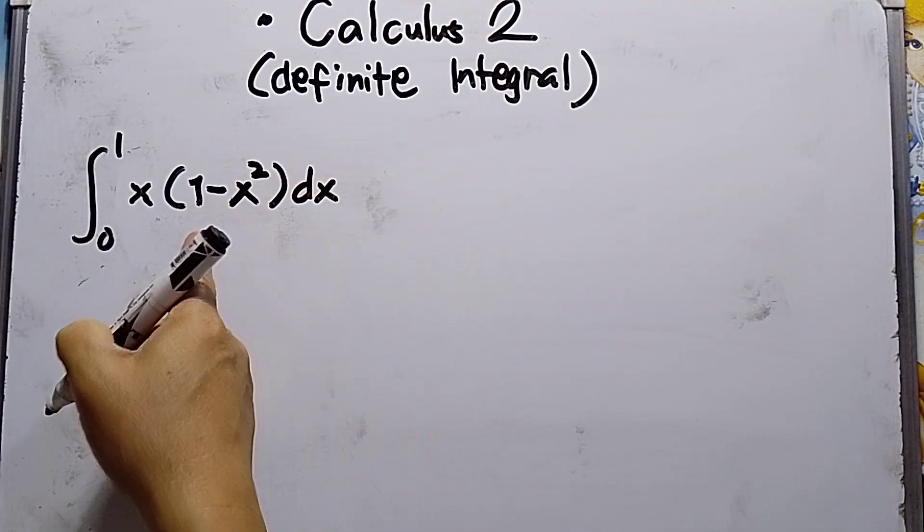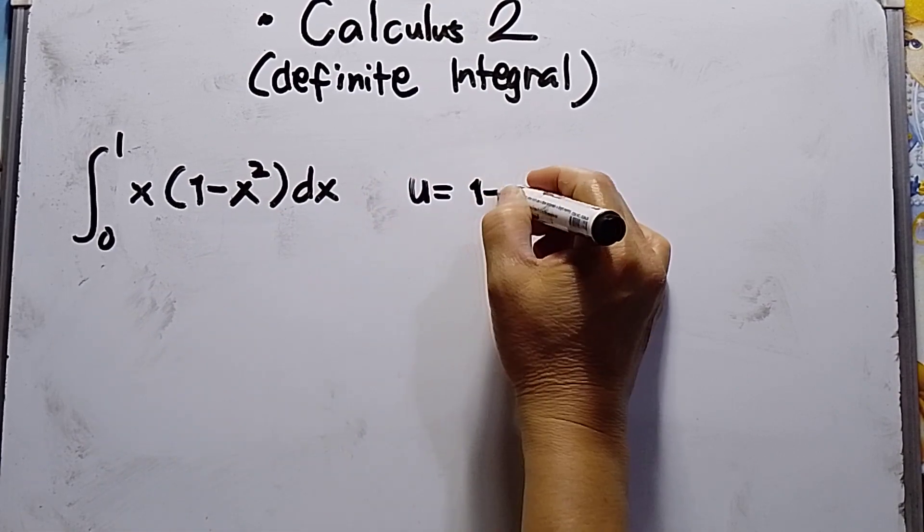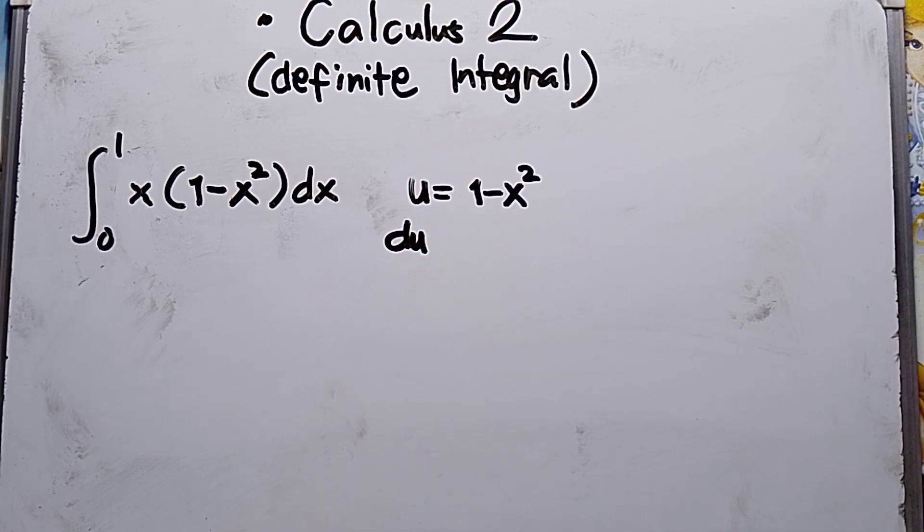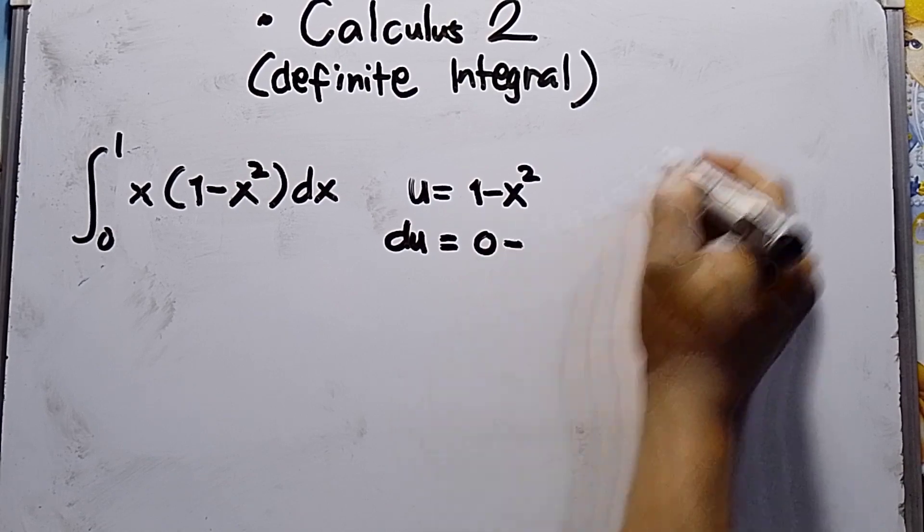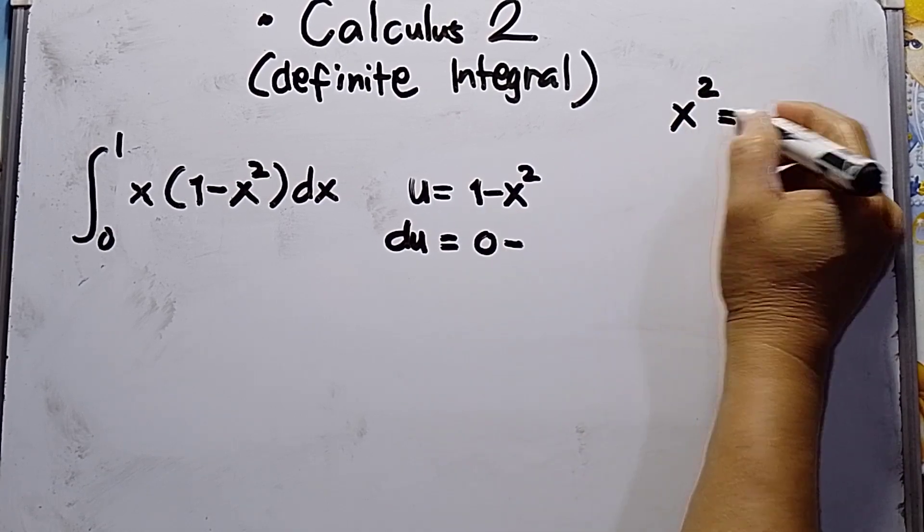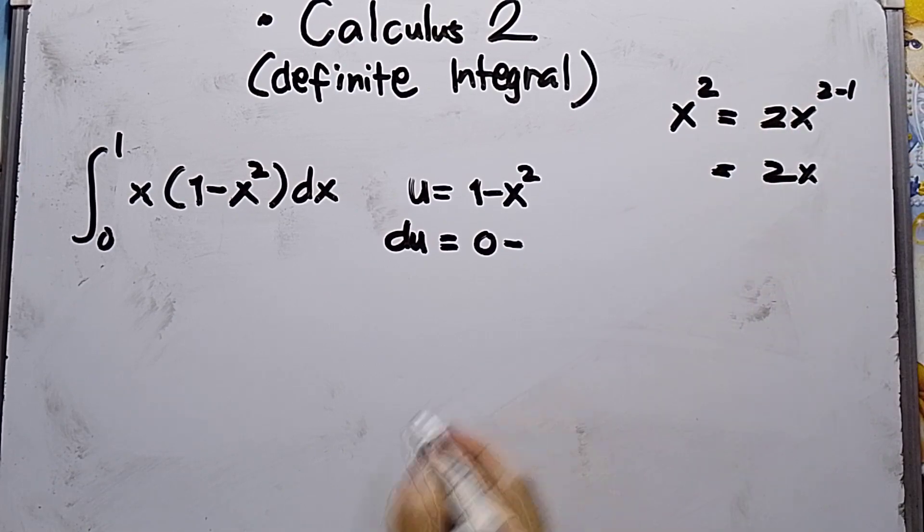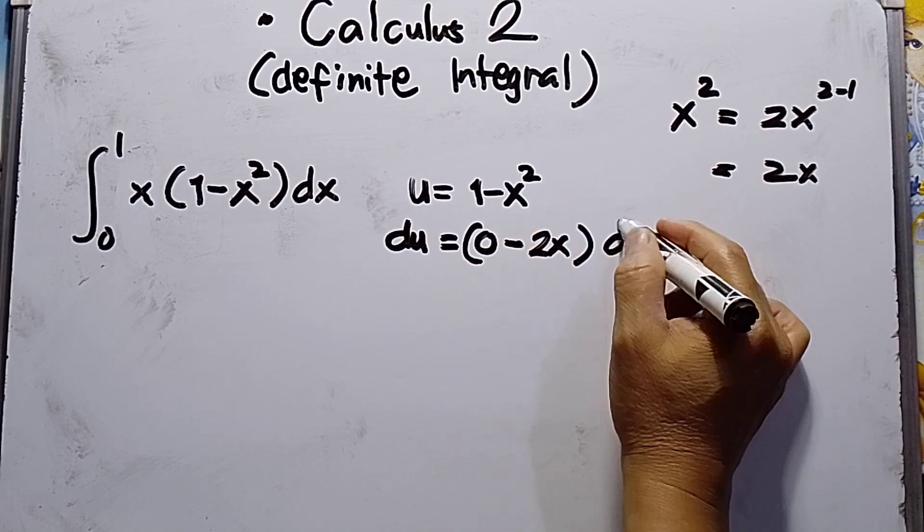To evaluate this, we let u equal 1 minus x squared. The derivative, du is equal to, derivative of a constant is 0. Then take note, x squared, it should be 2x. So this will be minus 2x, then we need to put dx.